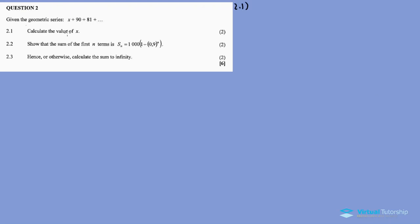So 2.1 says calculate the value of x. To calculate the value of x, you need to have an equation in order to solve or find that value for x. Since this is a geometric series, we use a common ratio. The common ratio is calculated as t2 divided by t1 or t3 divided by t2. The ratios are equal because it's a common ratio.